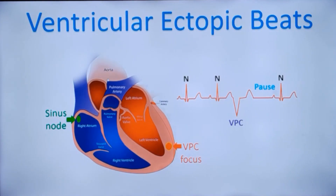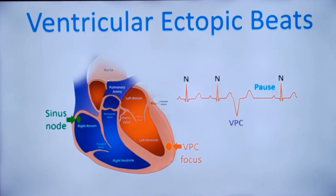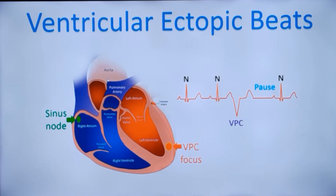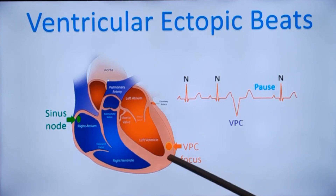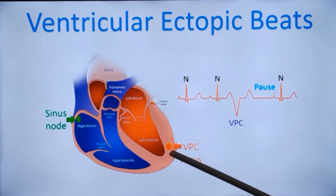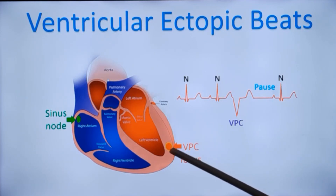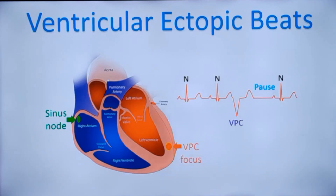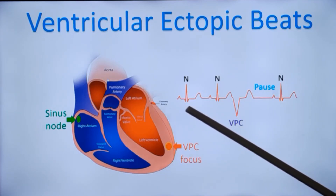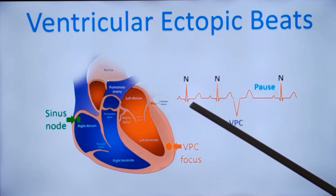Normal heart rhythm originates from the sinus node, which is the natural pacemaker of the heart. But in ventricular ectopics, it is exactly from the opposite location. The focus originates from the ventricle, usually due to increased irritability or some other mechanism — it could be re-entry or triggered activity. Some mechanism is causing an extra focus to fire from the ventricle. So if the normal sequence is P wave followed by QRS and T wave,